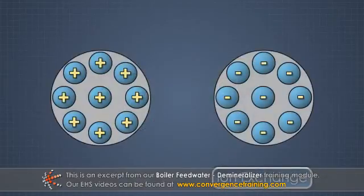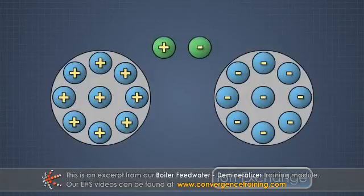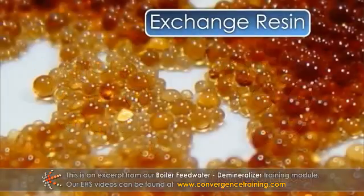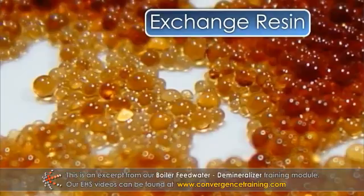Ion exchange is a reversible chemical reaction in which ions present in a solution are exchanged for a similarly charged ion attached to an immobile solid particle of ion exchange material. This process involves treating the feed water with an exchange resin.